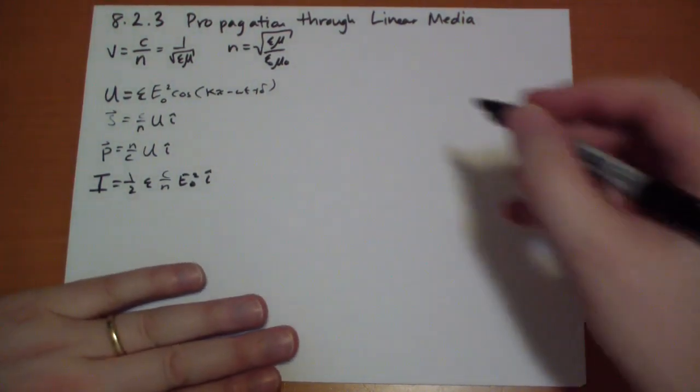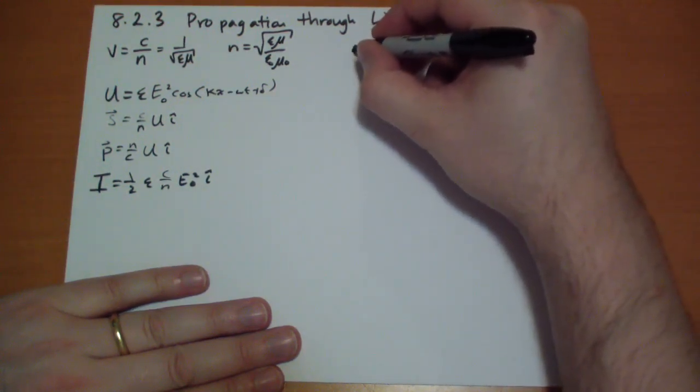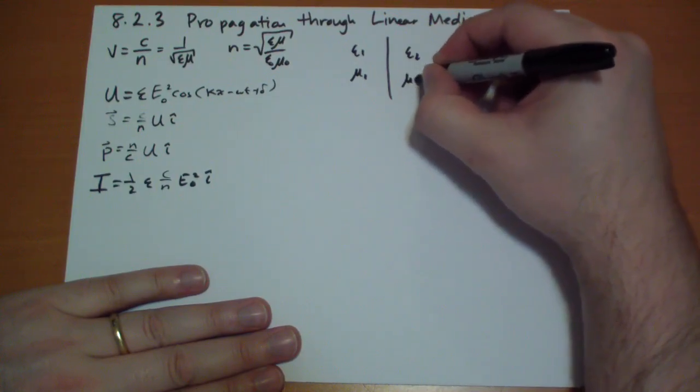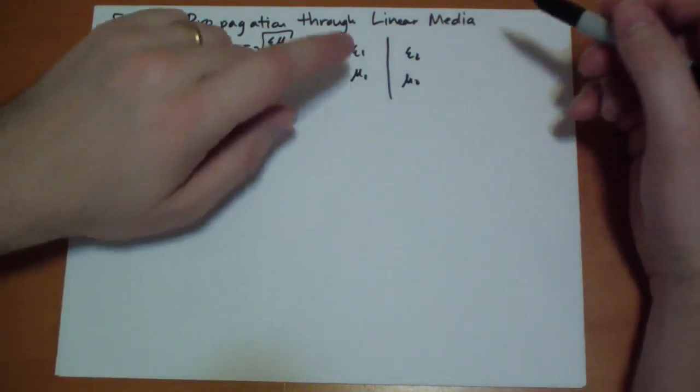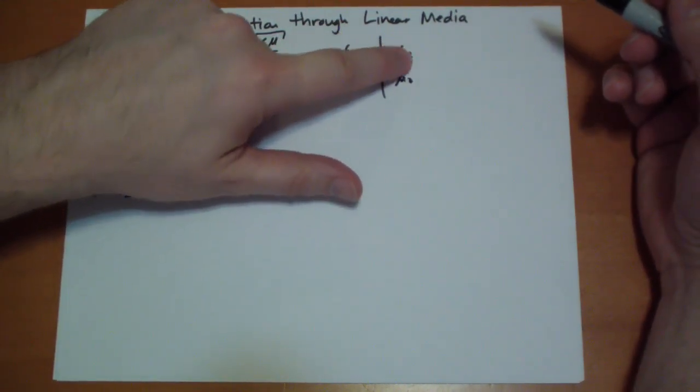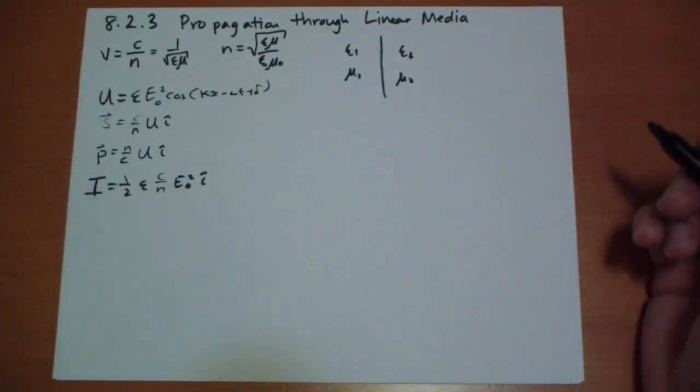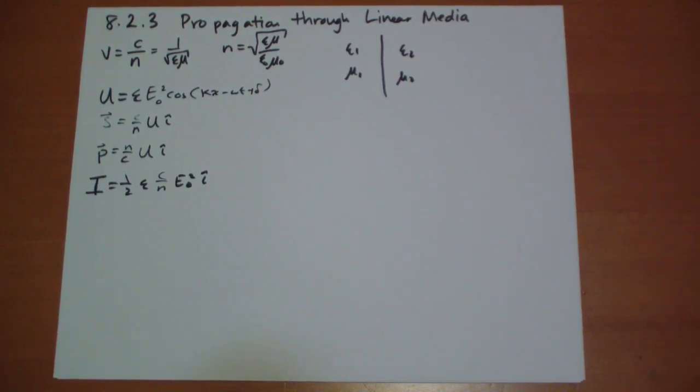Back in chapter seven, we discovered, we have basically epsilon one and mu one on one side, epsilon two and mu two on the other side. And then we have our electric field one and our electric field two and our magnetic field one, our magnetic field two on the other sides. And we broke it down into perpendicular and parallel components of those fields.